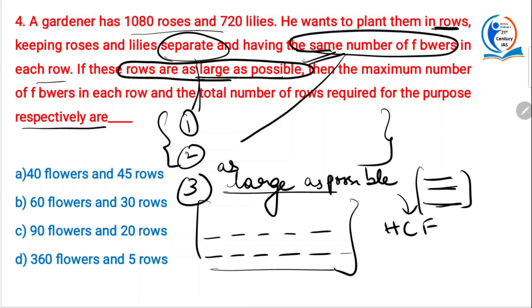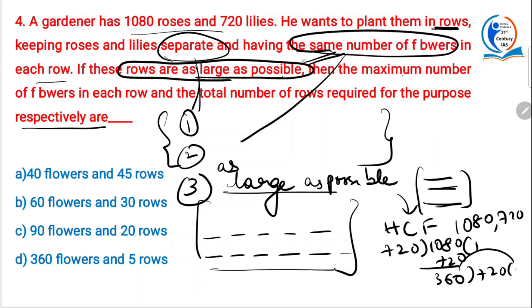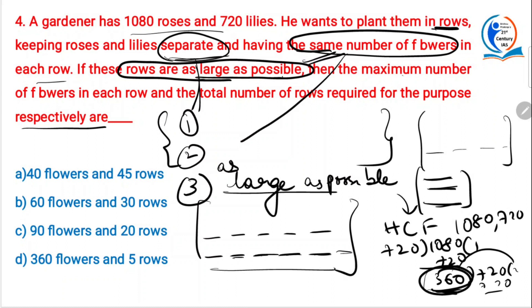Instead of directly saying 'find the HCF', he gives you the full story. So what is the HCF of 1080 and 720? Working through the calculation: 360 is the highest common factor of 1080 and 720. This is not random — the gardener wants maximum flowers in each row, equal in every row, and kept separate. All three conditions require HCF. So 360 is the number of flowers in each row.